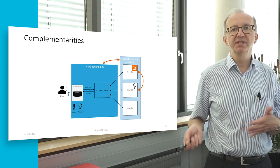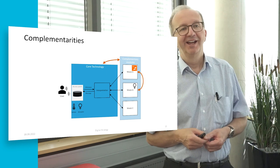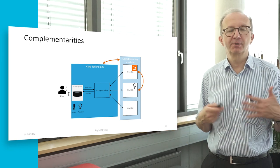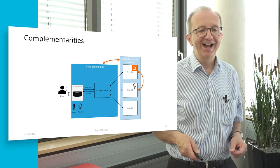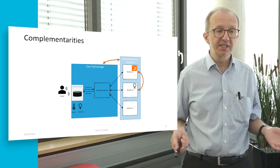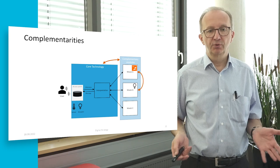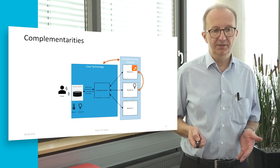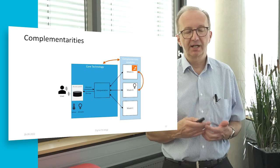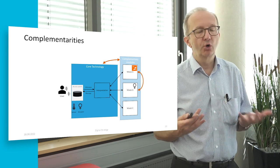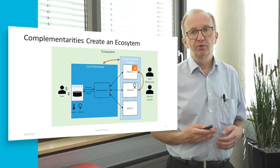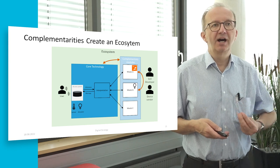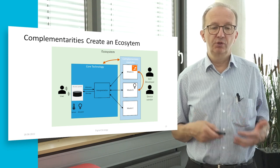You can also combine different skills together. For example, there is a skill called Good Morning Alexa that switches on the light in the kitchen and switches on the radio. Here you see the second type of complementarity: two modules together are more valuable than the sum of their individual values. Through these complementarities something emerges that is called an ecosystem.